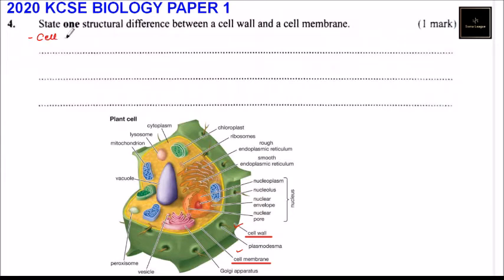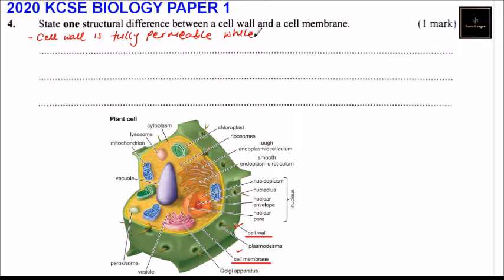One difference is that the cell wall is fully permeable. It means that liquid can pass through in and out of the cell wall. While the cell membrane is semi-permeable.